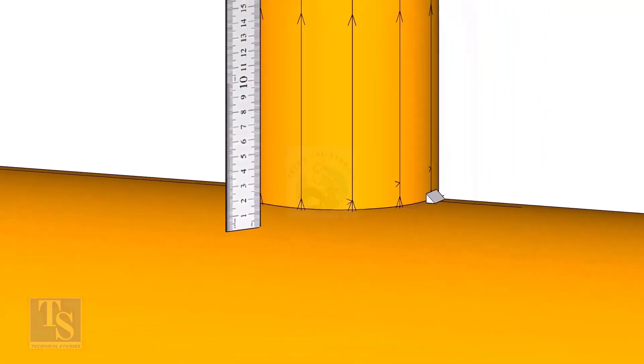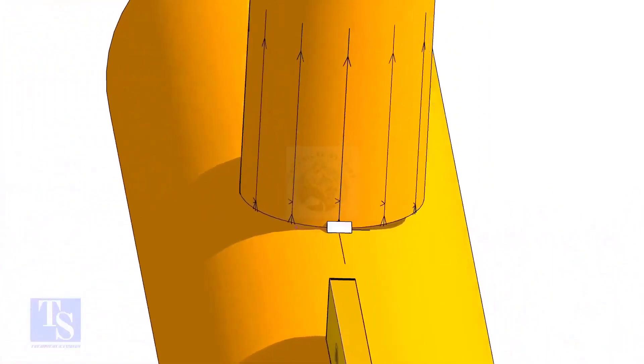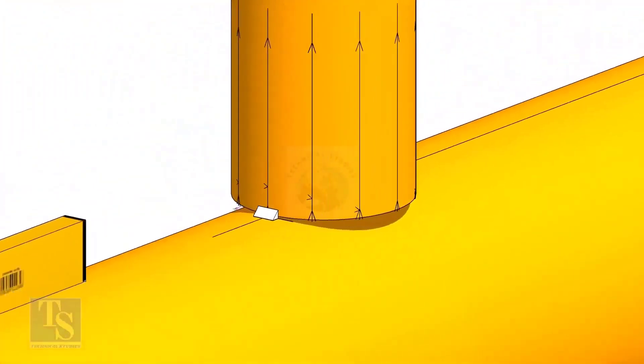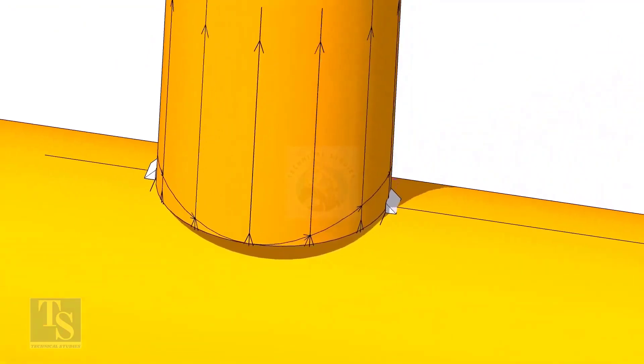Repeat the process and complete the marking around the branch pipe. Use a bend scale to make a smooth curve around the branch pipe.